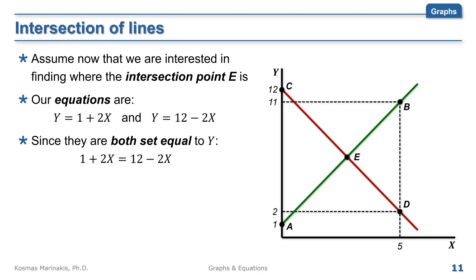This can be written as 2x plus 2x equals 12 minus 1 because the 2x will change side and therefore sign, and the same will happen to 1. The reason I wanted to do this is because I need everything that involves x on the left and everything that does not on the right. Now I can write this as 4 times x equals 11. I can divide both sides by 4. And I can calculate that x equals 2.75.